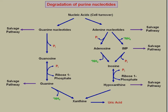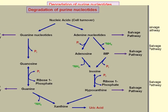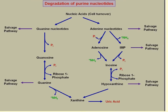Whenever you have cell turnover, the nucleic acids are released. The guanine nucleotides can go directly to the salvage pathway. GDP can go to the salvage pathway to produce GTP, and ADP can produce ATP.